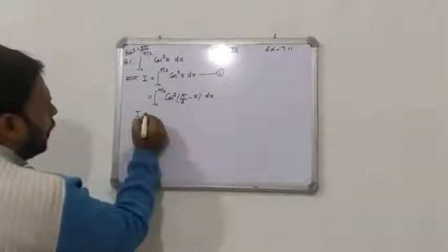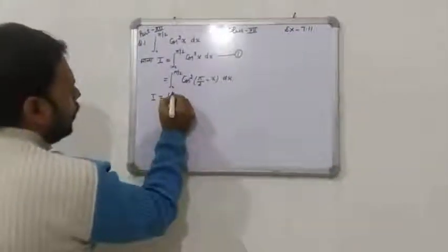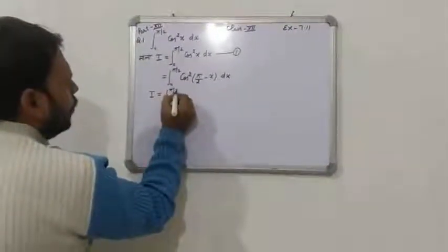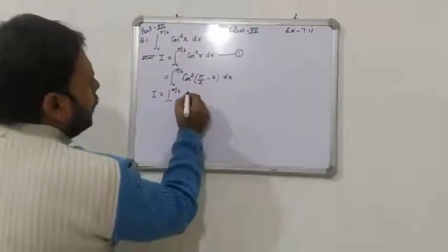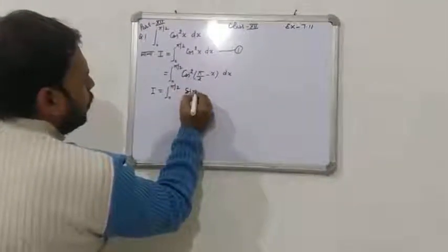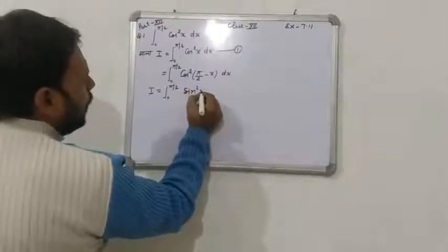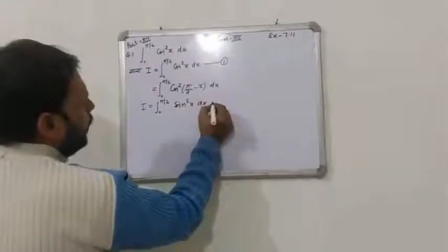I बराबर, 0 से π/2 limit, cos(90° − x) को sin में बदलते हैं — तो यह हो गया sin²x dx. यह equation number 2 है।